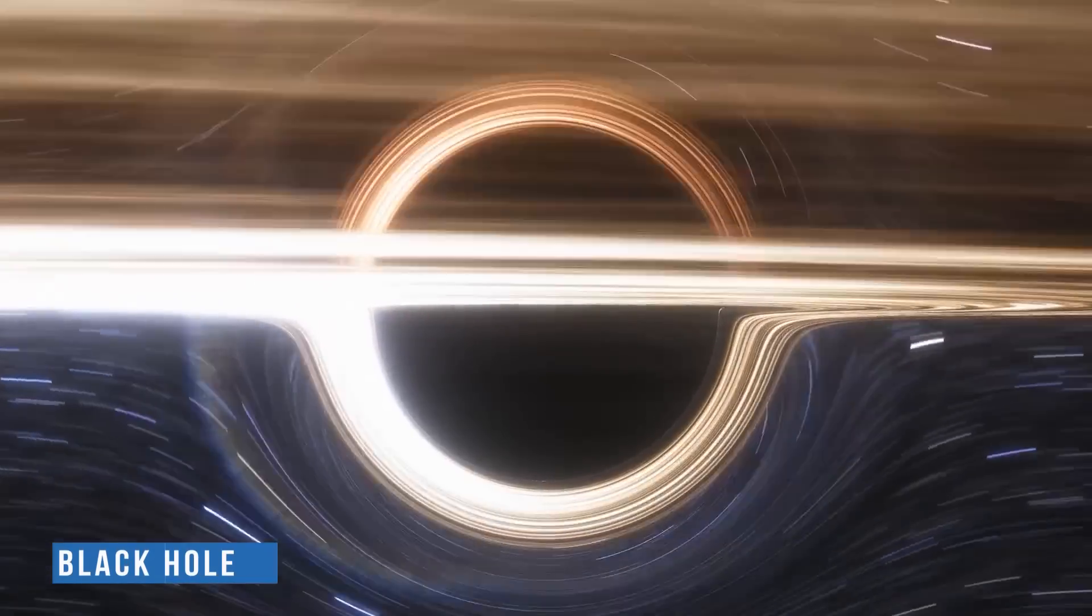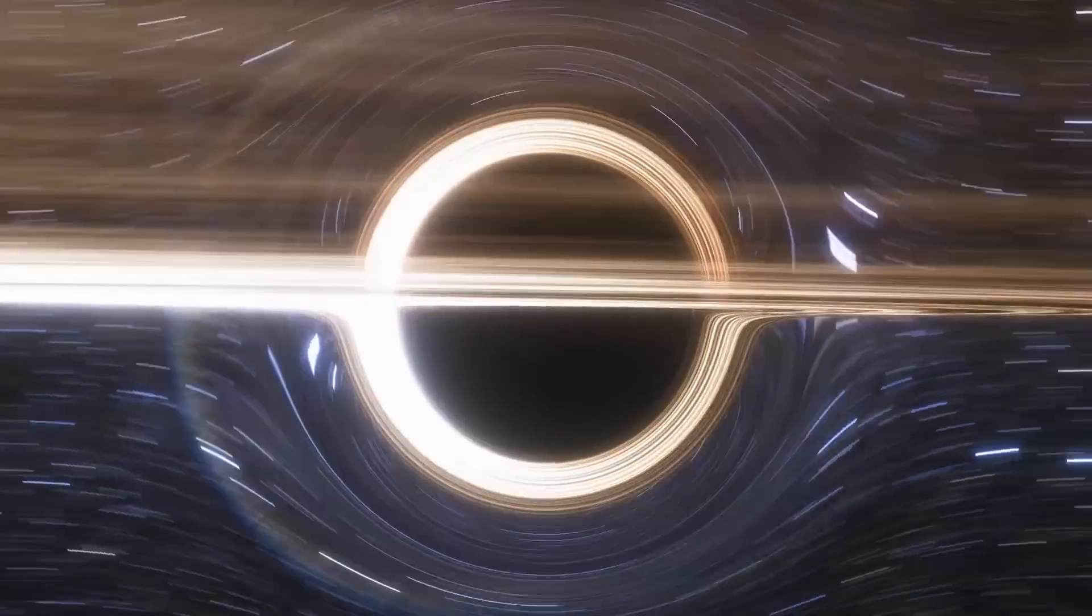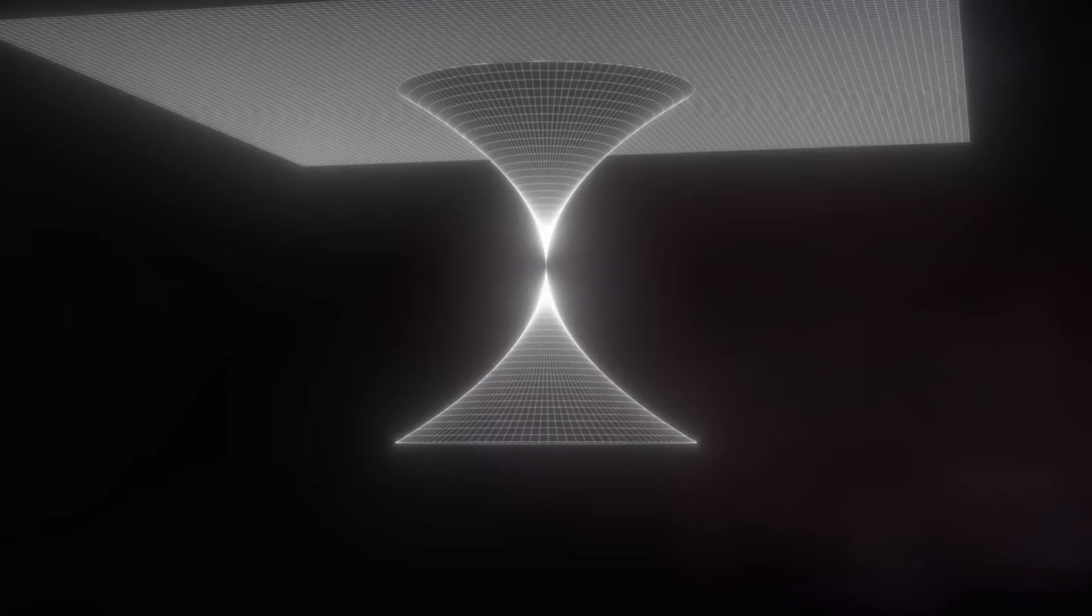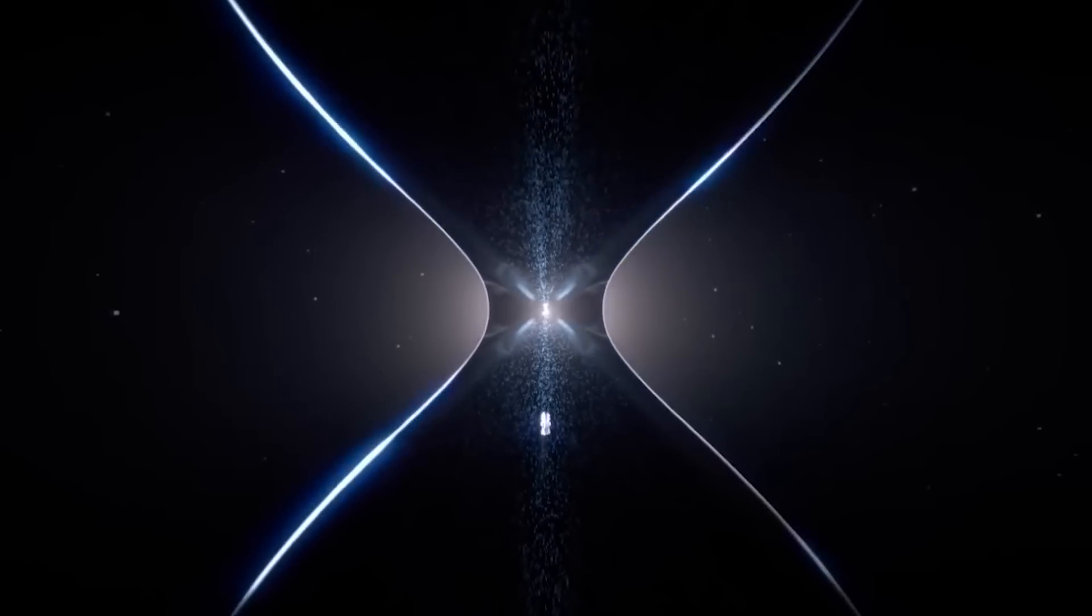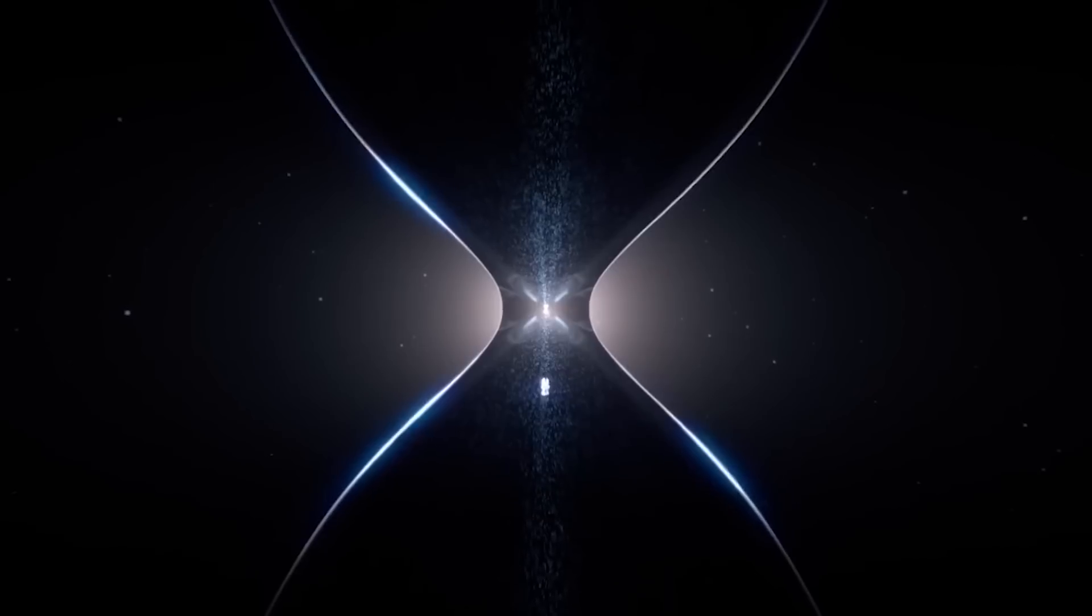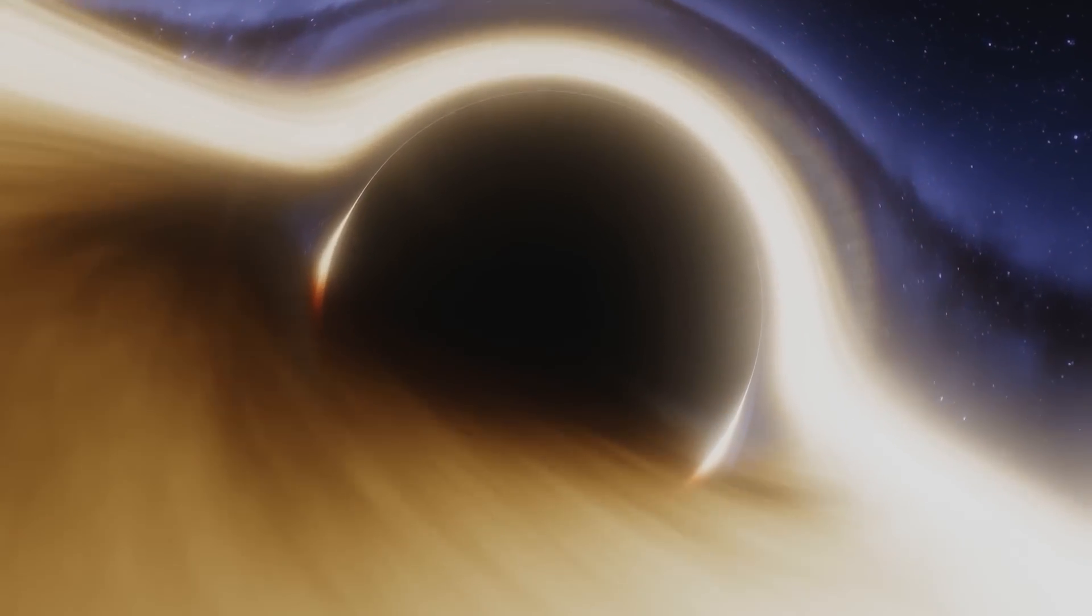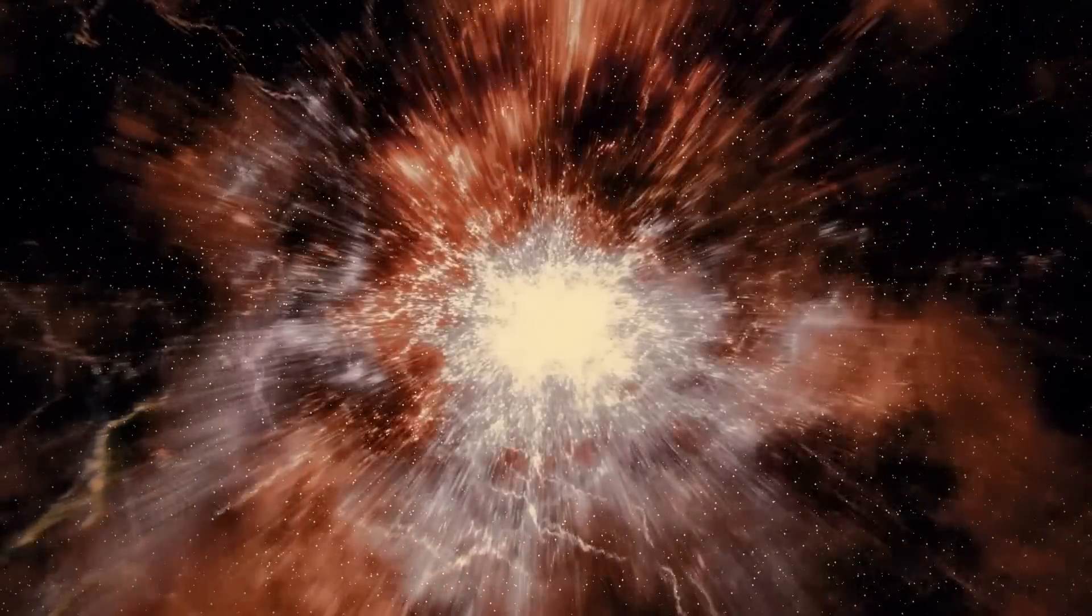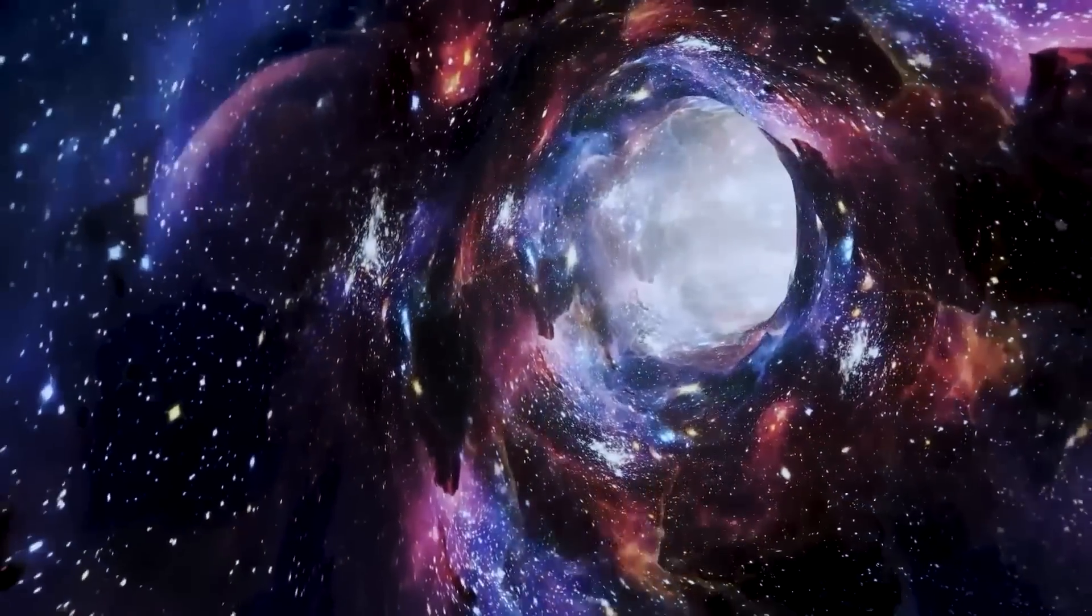For every black hole, Einstein and Rosen discovered there is a white hole somewhere else in the universe. And since these holes are in different parts of space, a tunnel would connect their two ends. However, the existence of this tunnel, known as a wormhole, posed a threat to stability, because even a single photon or particle of light traveling through the wormhole would introduce a tremendous amount of energy into the system. And you'll be trapped in the wormhole forever.